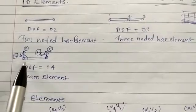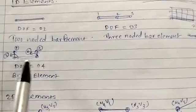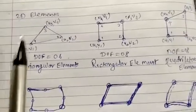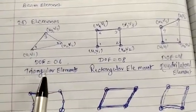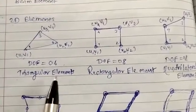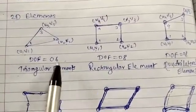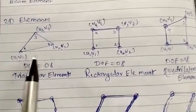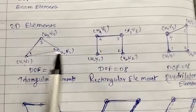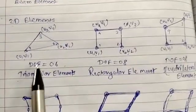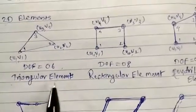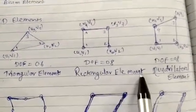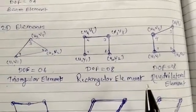The second type is 2D elements. The first example is the triangular element, which has a degree of freedom equal to six. At each node we have two degrees of freedom: u1, v1 at node 1; u2, v2 at node 2; u3, v3 at node 3 — giving a total degree of freedom of six. The next example is the rectangular element.